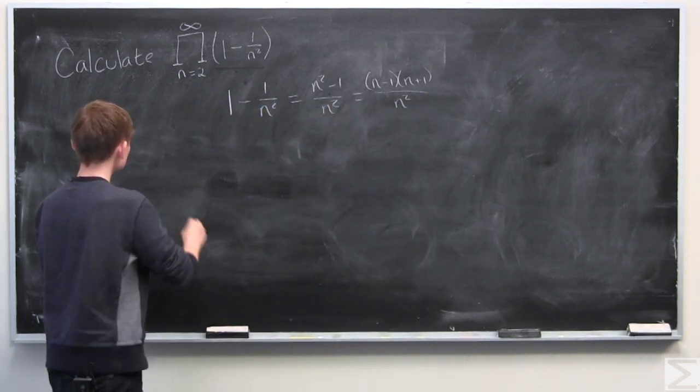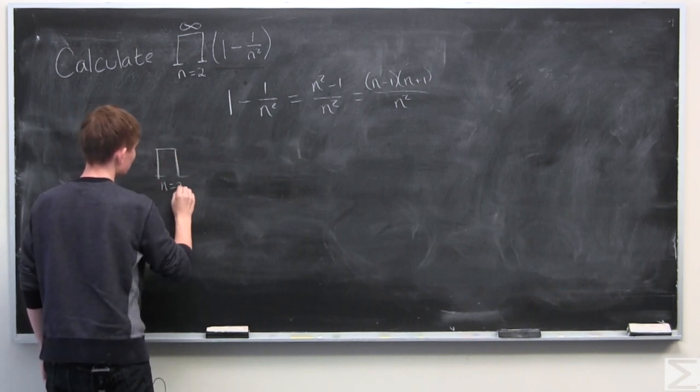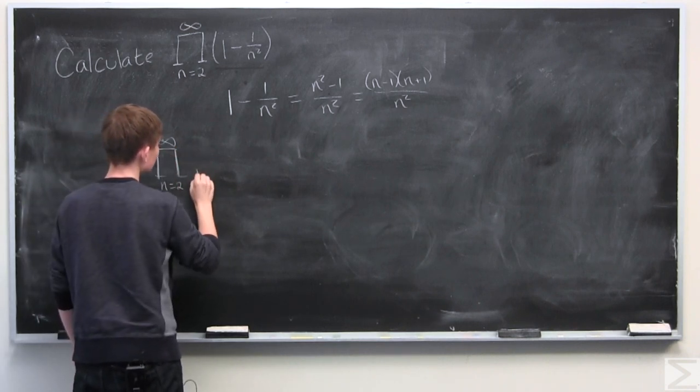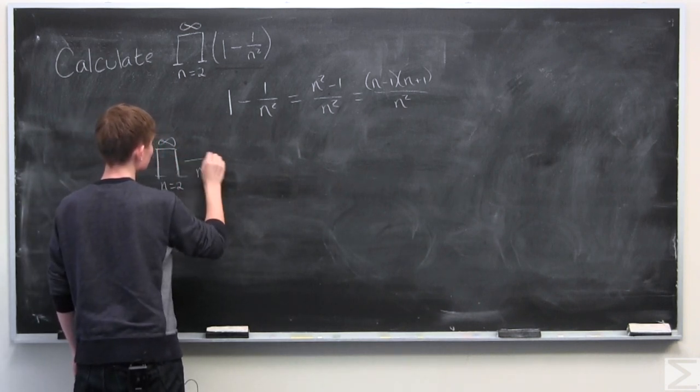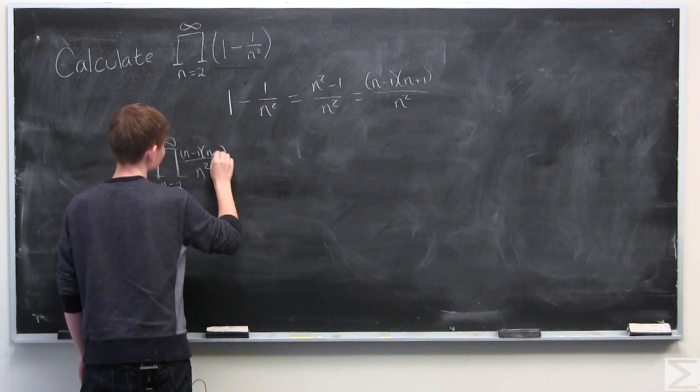And so we can rewrite this infinite sum as the infinite sum from 2 to infinity of n minus 1 times n plus 1 over n squared.